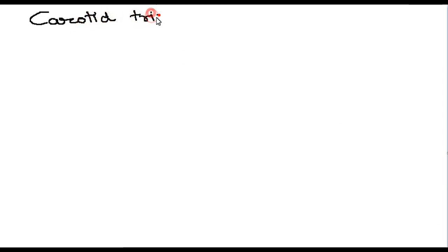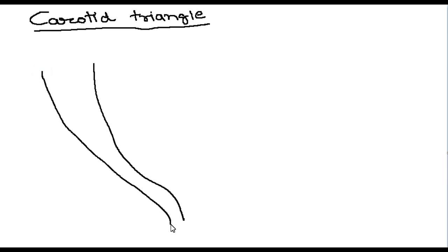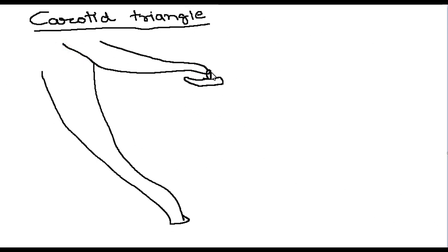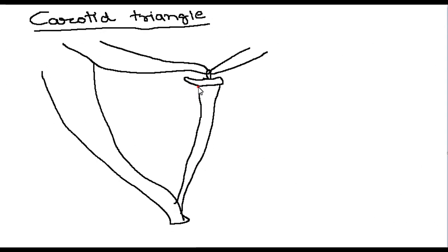Today we are going to discuss the carotid triangle. We will draw a simple diagram showing the boundaries of the carotid triangle. One muscle attaches to the hyoid bone — this is the hyoglossus muscle. Posteriorly we have the anterior border of the sternocleidomastoid muscle; superiorly we have the posterior belly of the digastric; anteriorly or inferiorly we have the superior belly of the omohyoid muscle. These are the boundaries of the triangle.